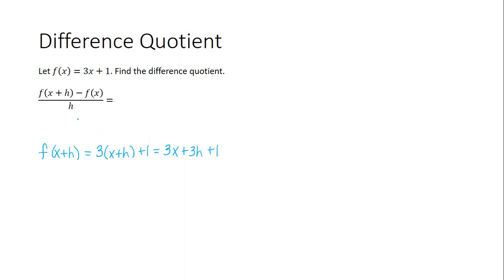So in the difference quotient, f of x plus h is 3x plus 3h plus 1. Then we need to subtract the function f which is in parentheses 3x plus 1. And then all of that is divided by h.